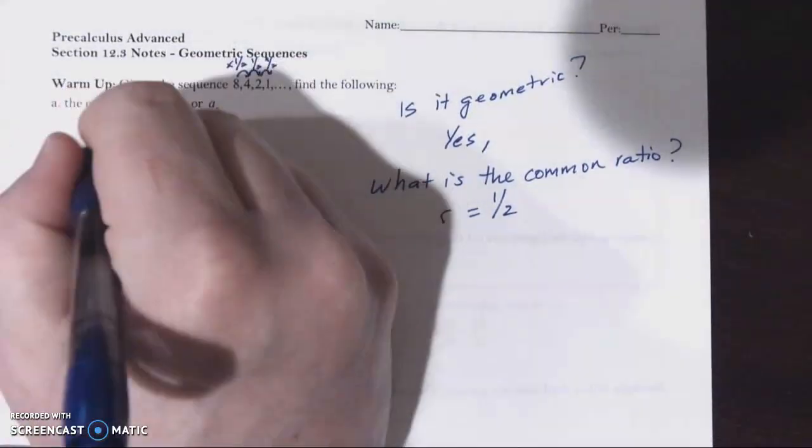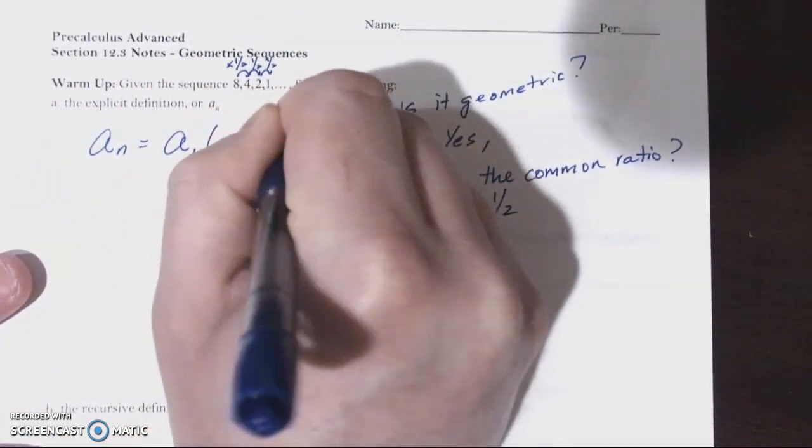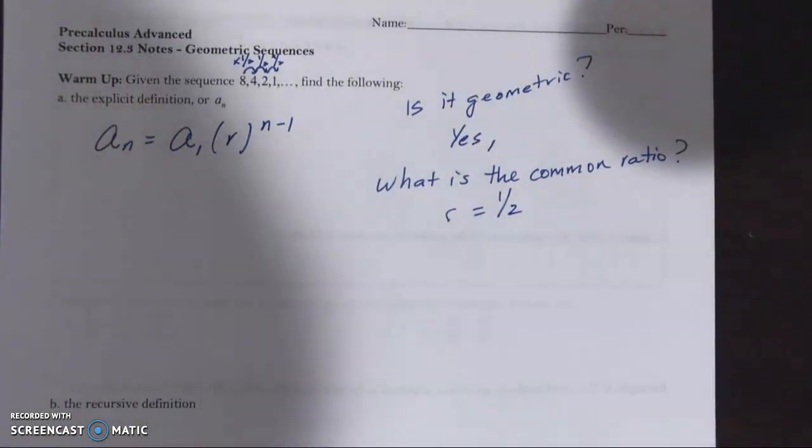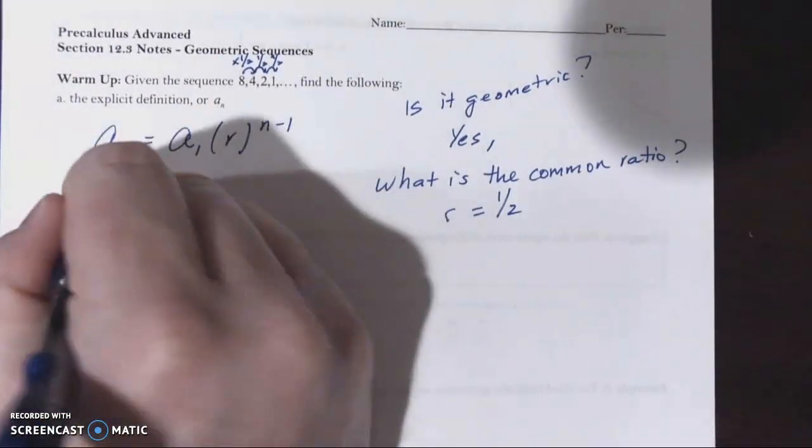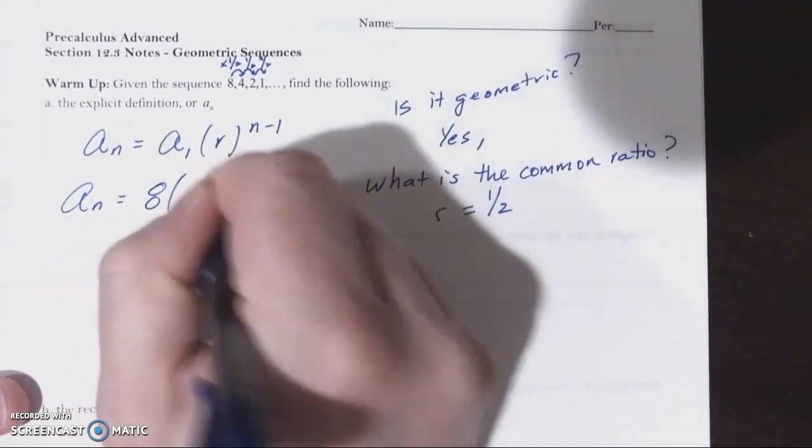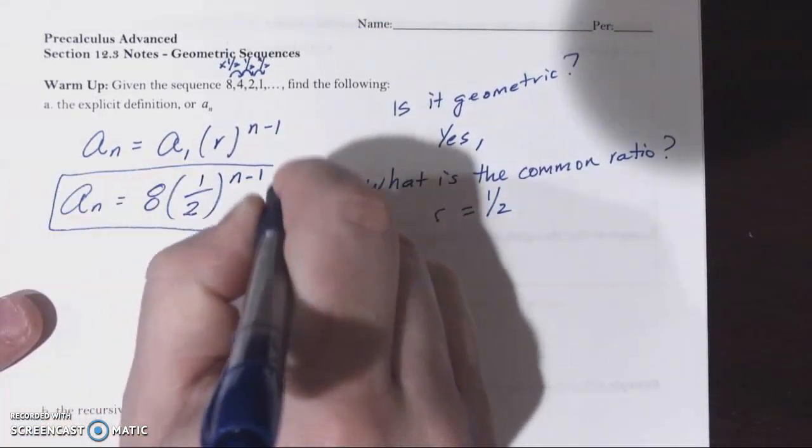Now let's take our explicit formula from below. That's obviously given to you on any assessments. We're going to allow you to use those formulas. So if this is our formula to find the nth term of a geometric sequence, then we know what the first term is. The first term of the sequence is eight. The common ratio we found to be one half to the n minus one power. This would be our answer.